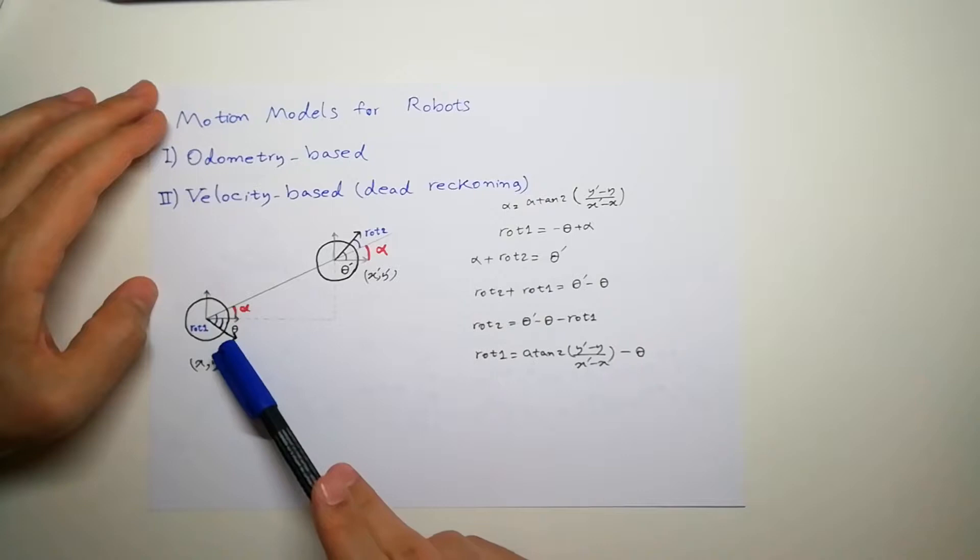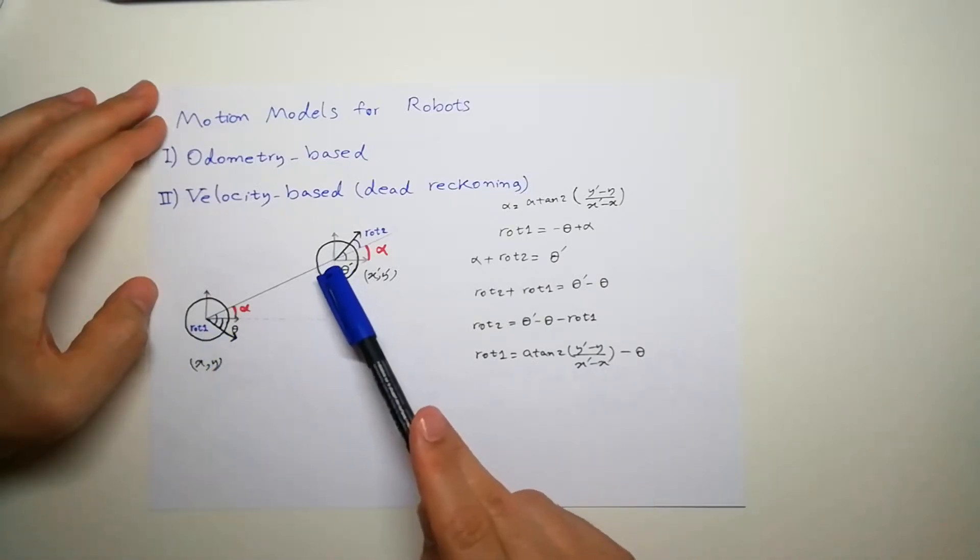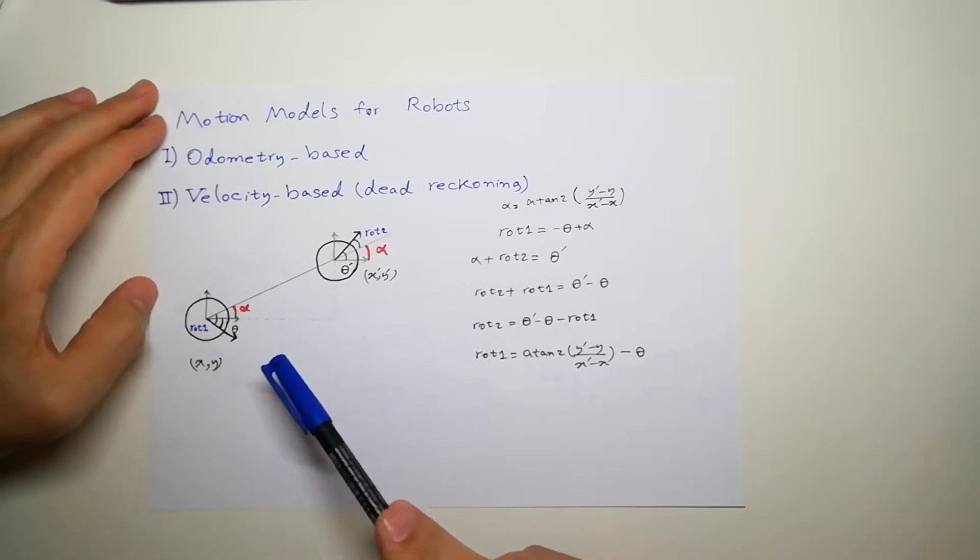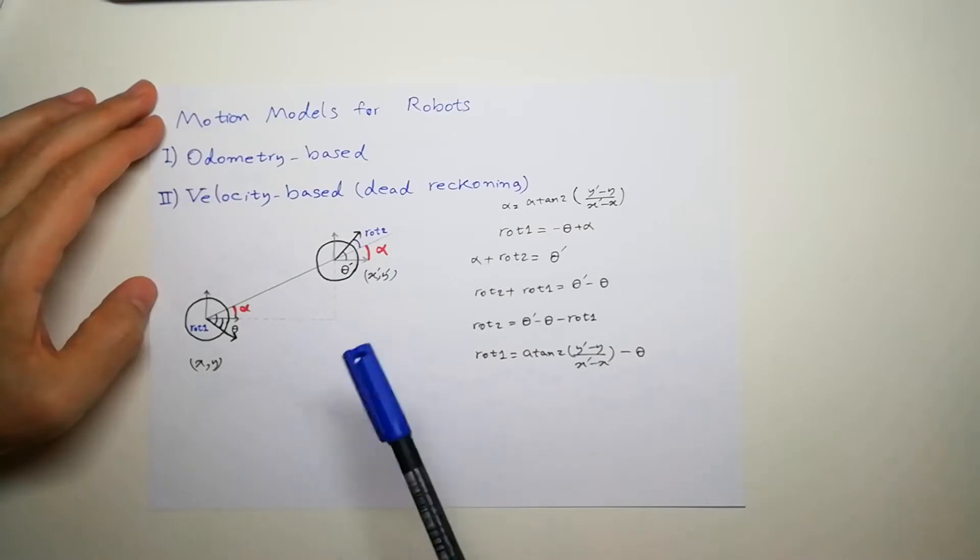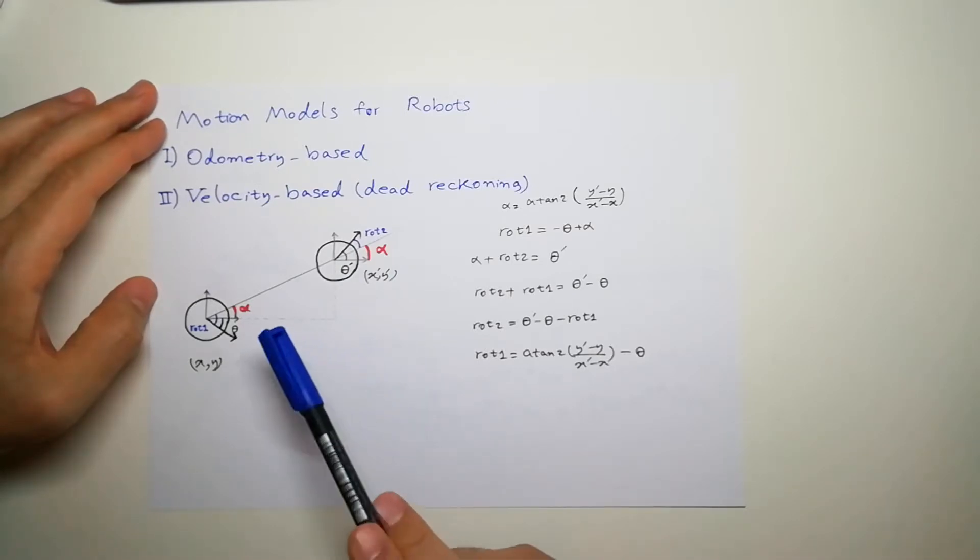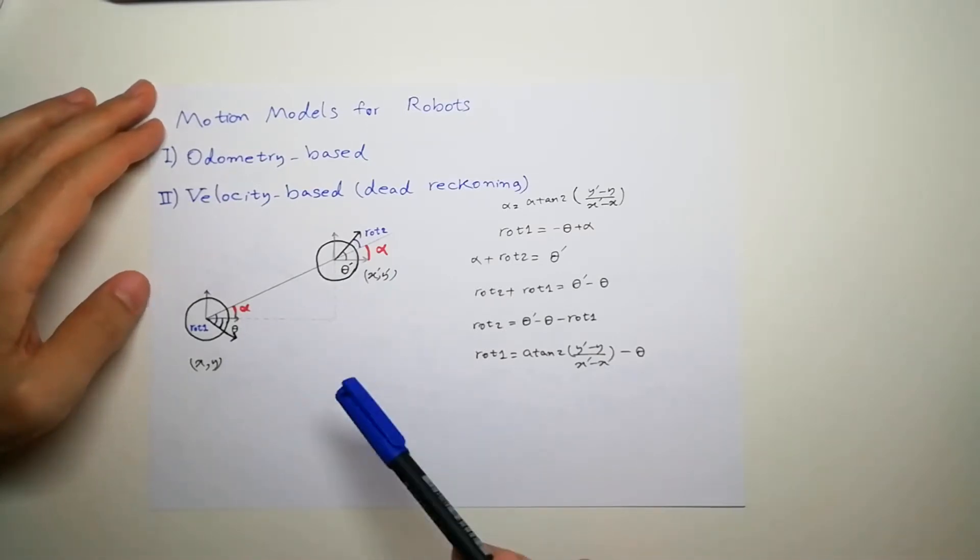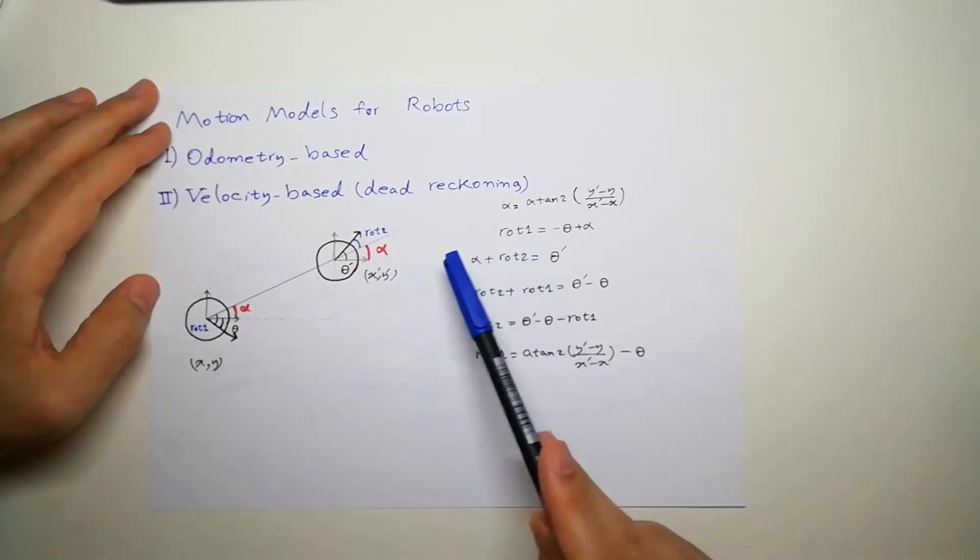Theta is the initial heading of robot, theta prime is the new heading, rotation 1 is the angle that we have rotated here, rotation 2 is the second rotation, and alpha is an auxiliary angle that we are going to need for finding parameters.